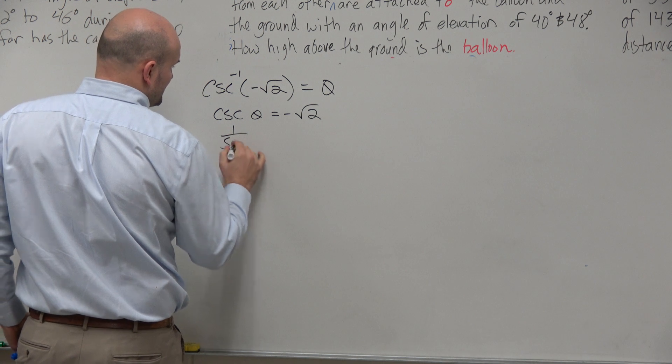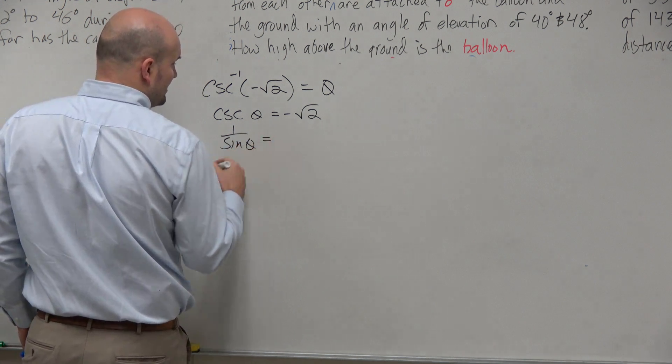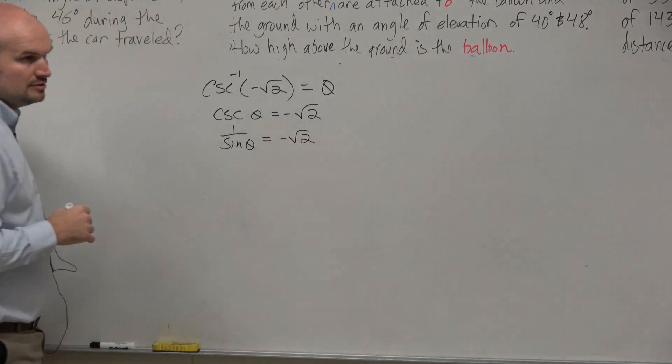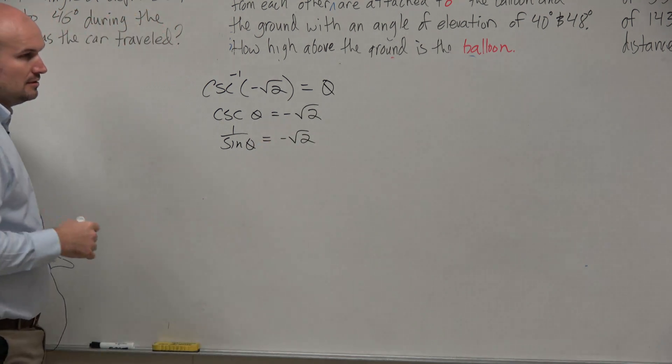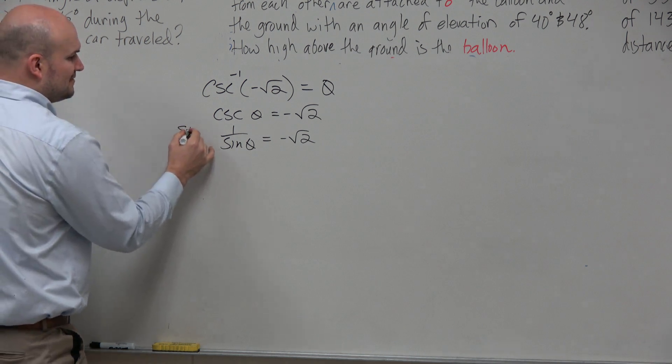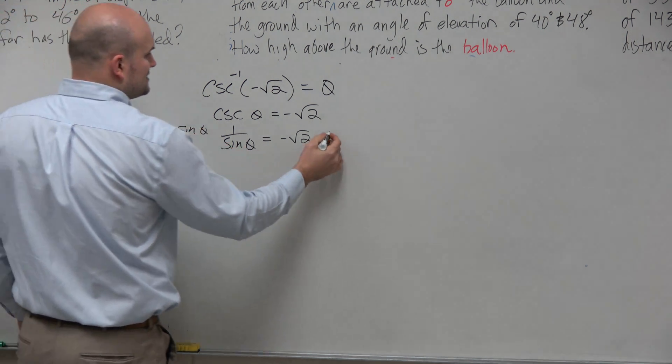So I could rewrite this as 1 over sine of θ equals negative √2. Do you guys agree with that? Of course, 1 over sine. And then I could multiply by the sine of θ on both sides to get sine of θ off the denominator.